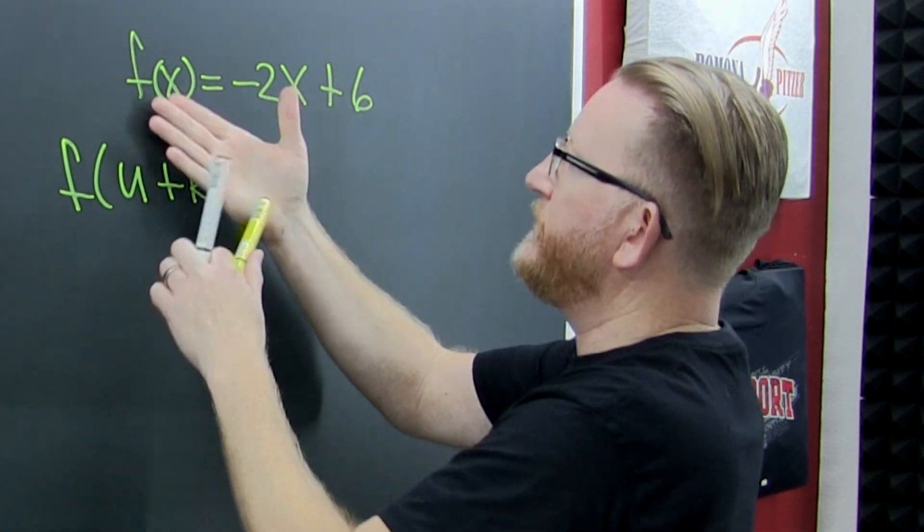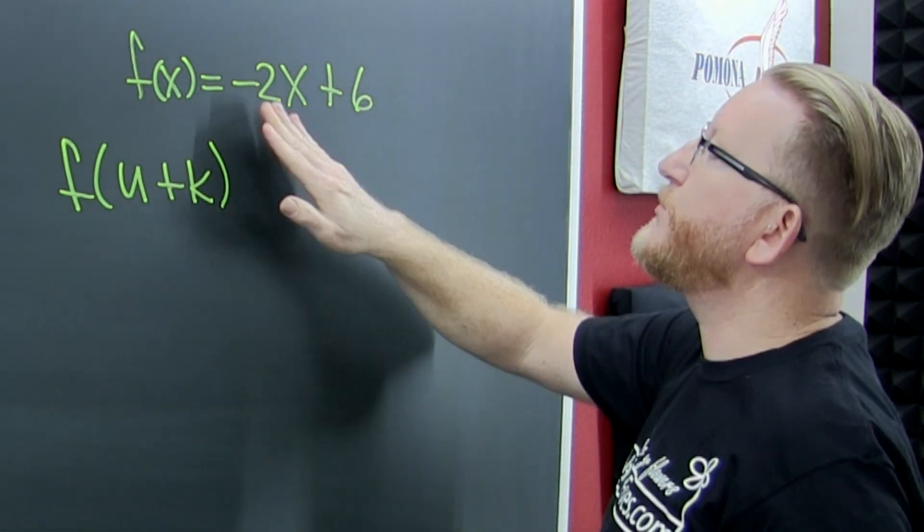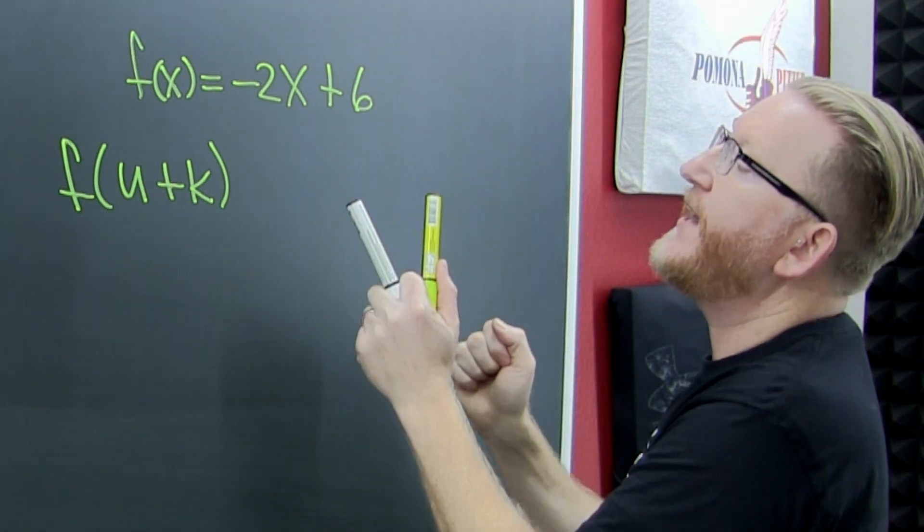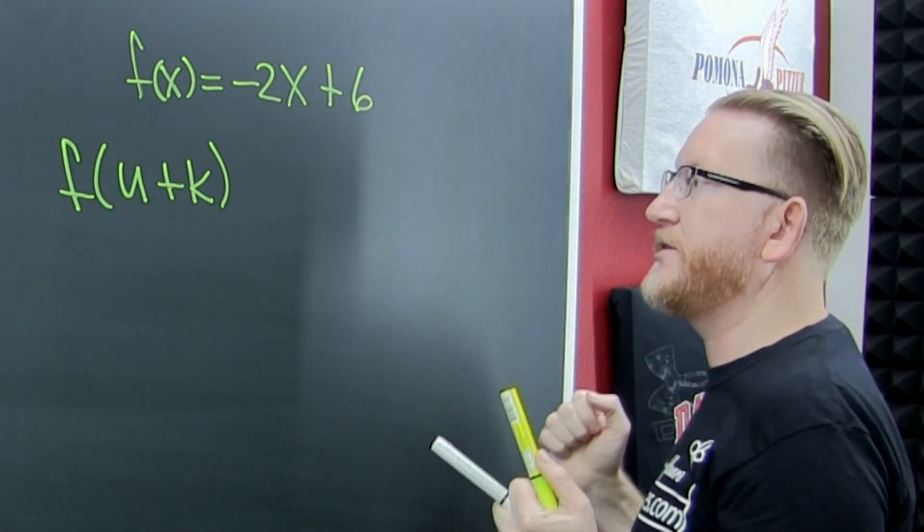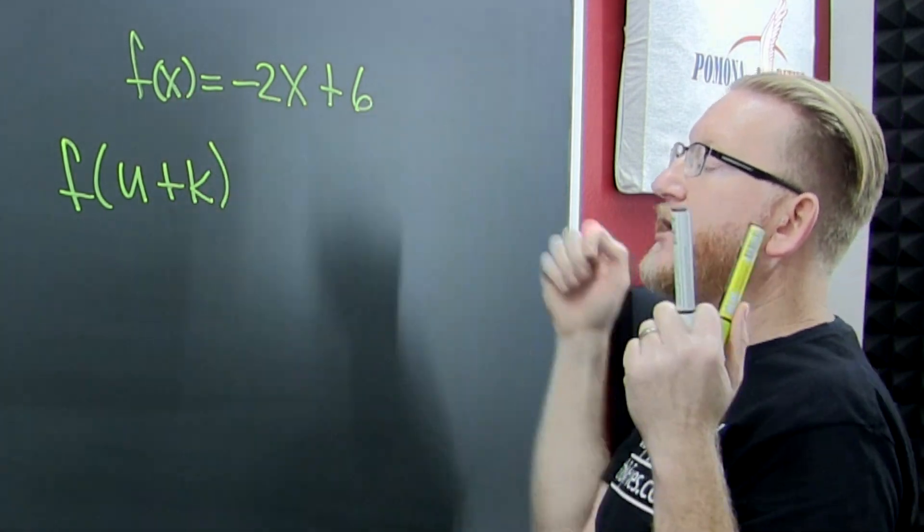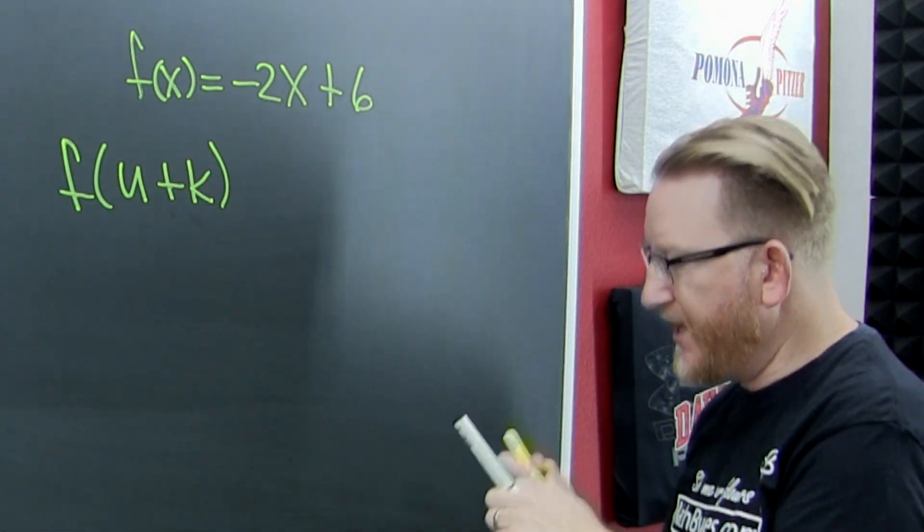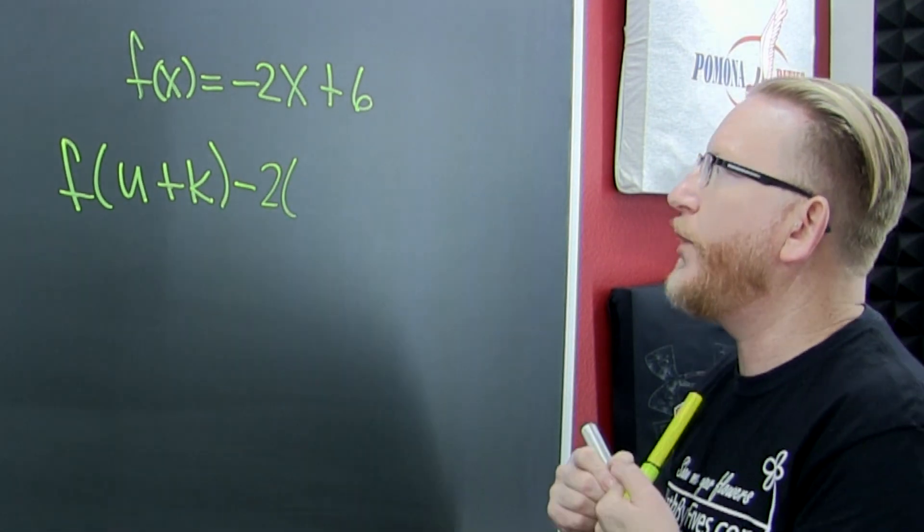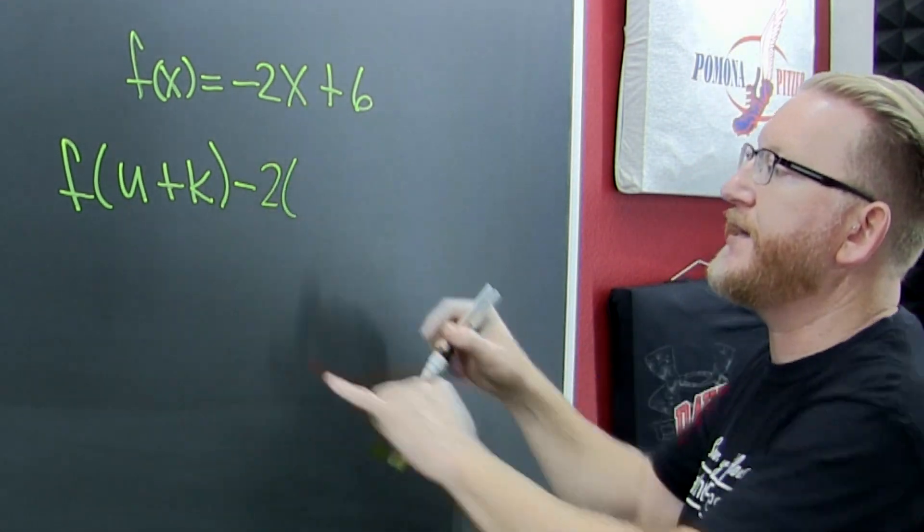This function is -2x + 6. I want to evaluate it at u+k, so everywhere I see an x I'm going to put a u+k.